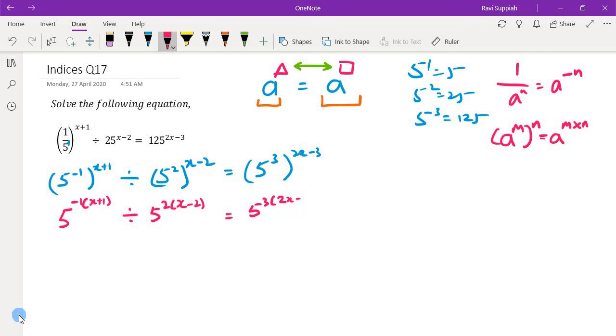So over here, it will be 5 to the power of minus 1 to the power of x plus 1. I guess I'm just rewriting it to sort of clearly show what we need to do. So what we need to do is we need to do an expansion where the term outside is multiplied by all the terms inside.